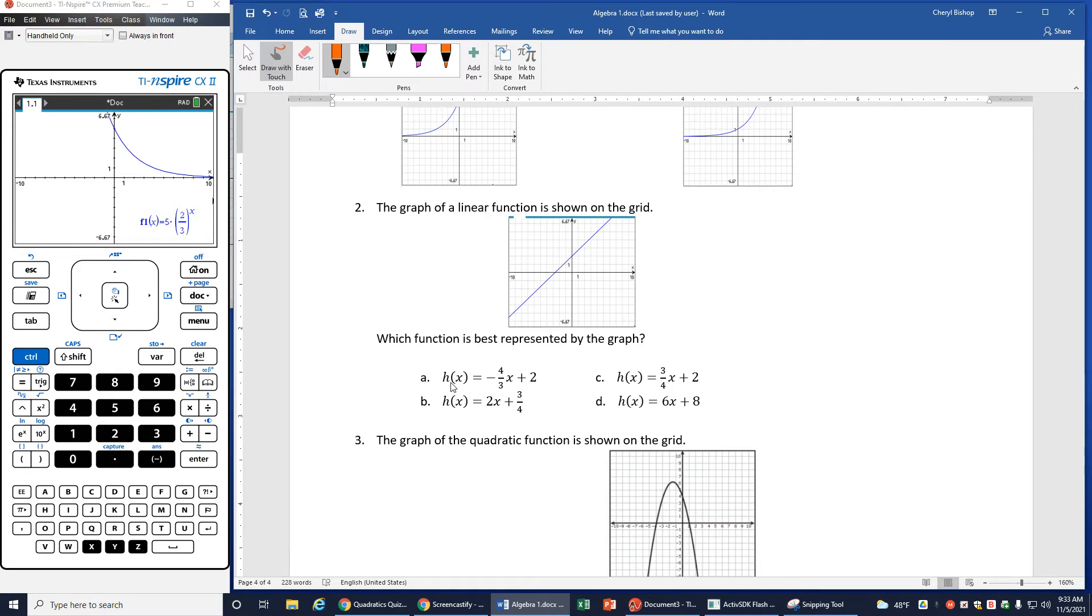Okay, so when I look at this one, and I want to check which one of these graphs is going to match this, I can see it's going uphill. So I know that if I'm going to do elimination, I know it's not going to be any of the ones that have a negative. So I know I can eliminate A because that's going to go downhill because I have a negative 4 thirds X.